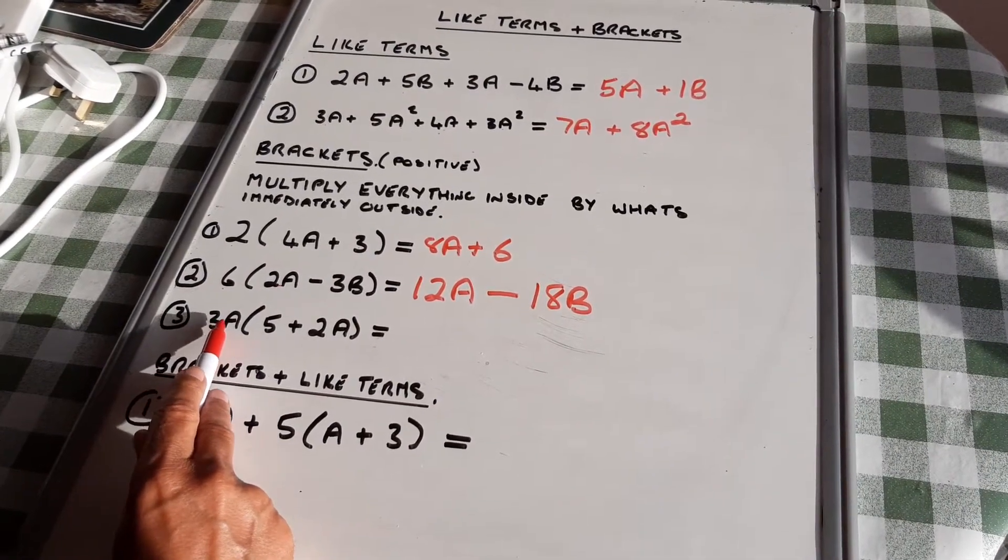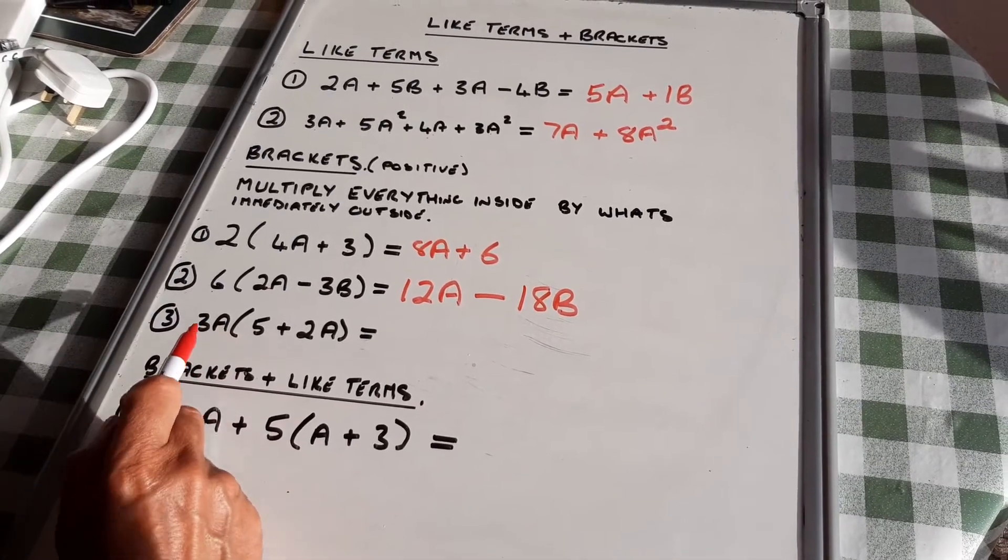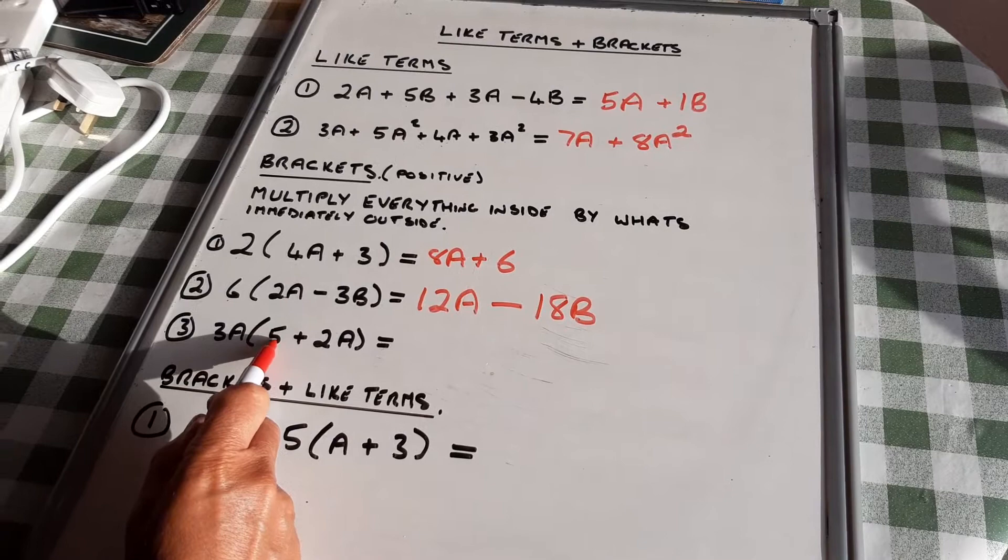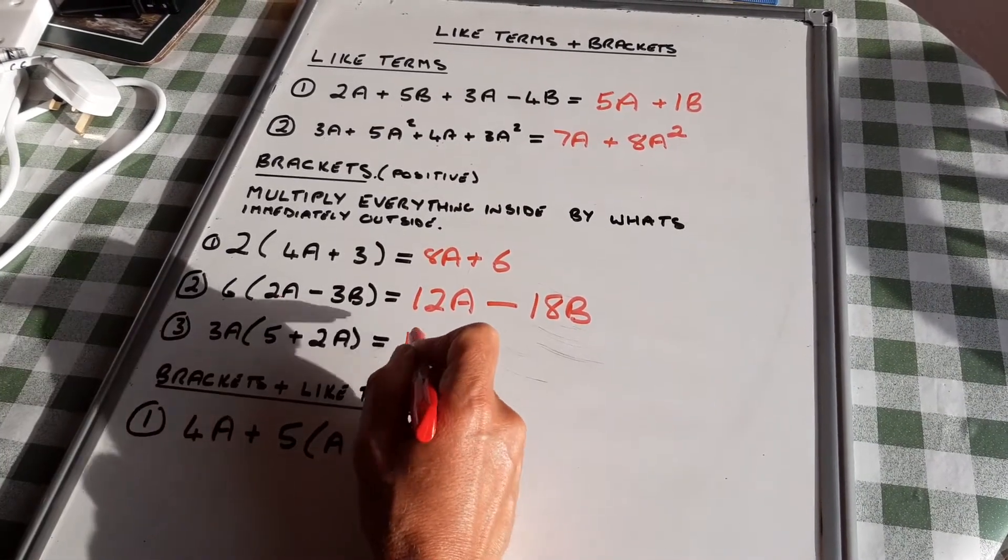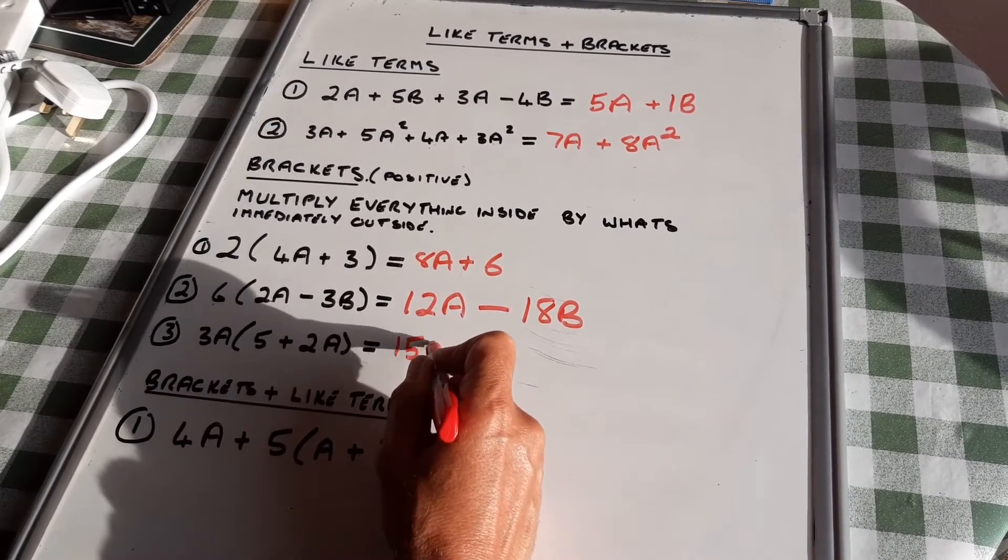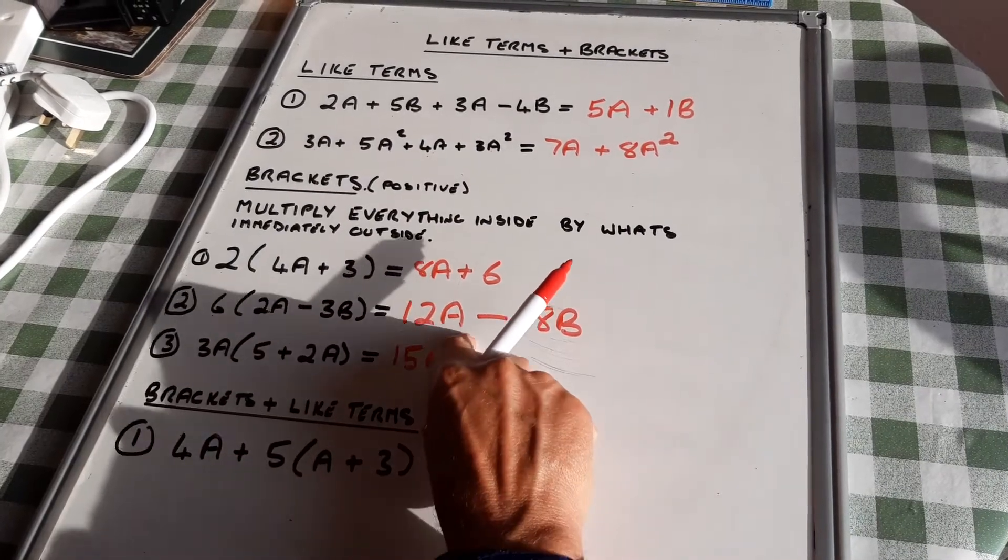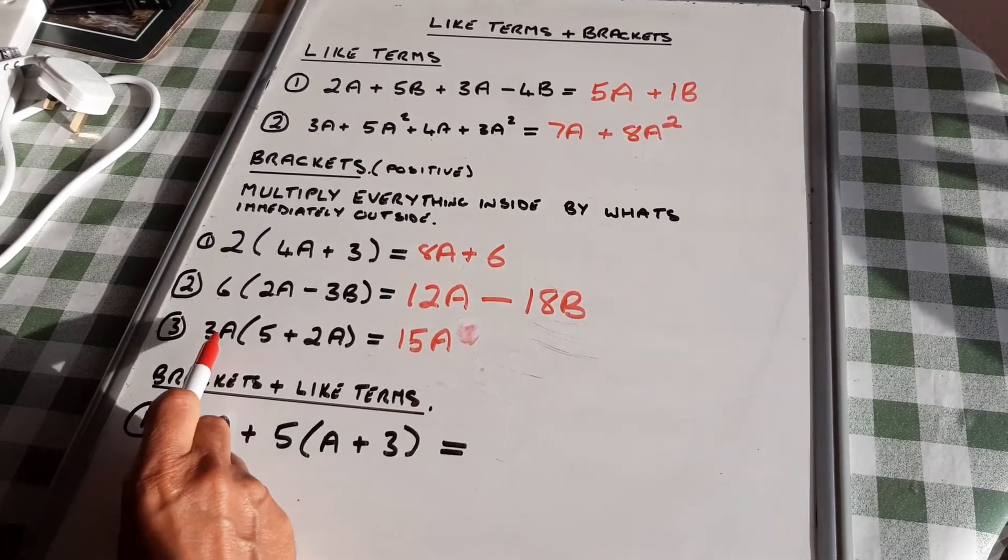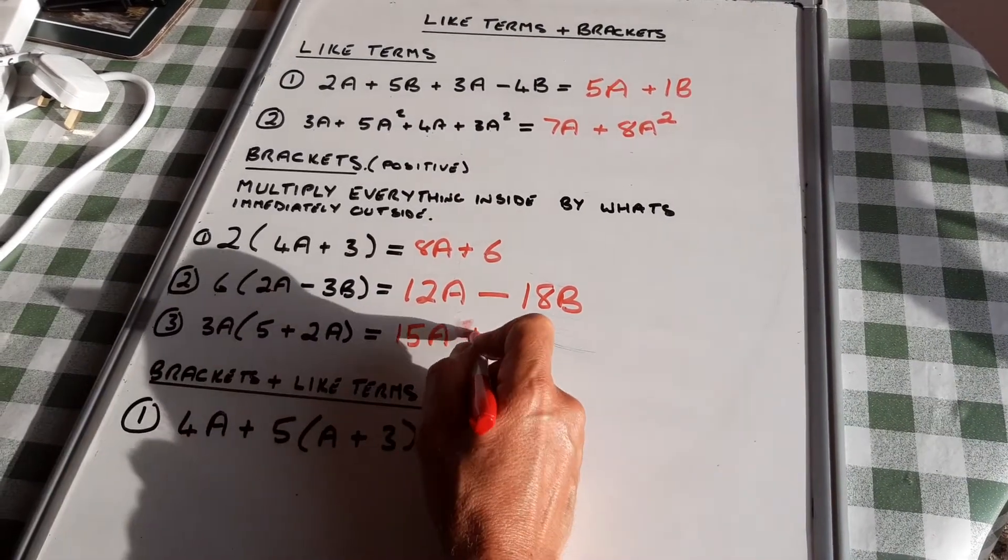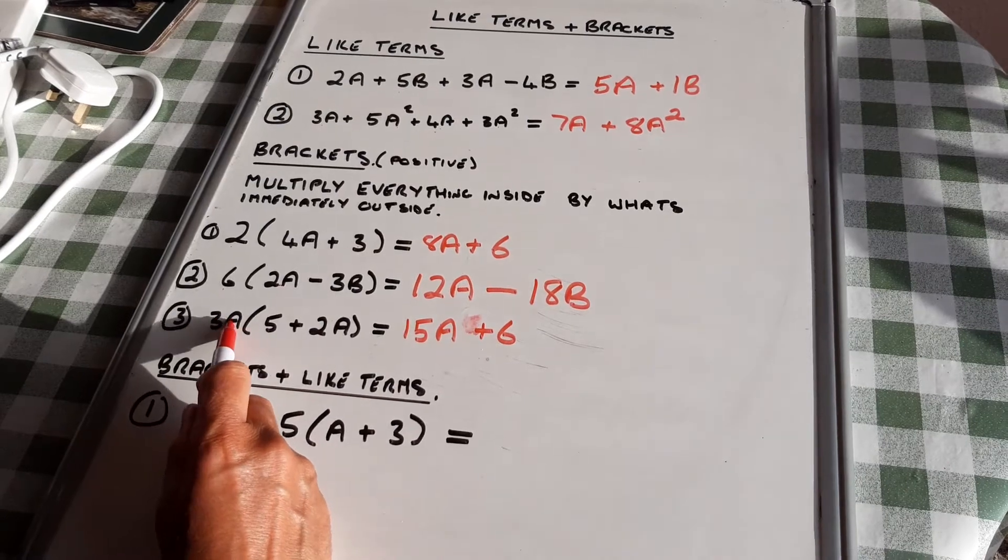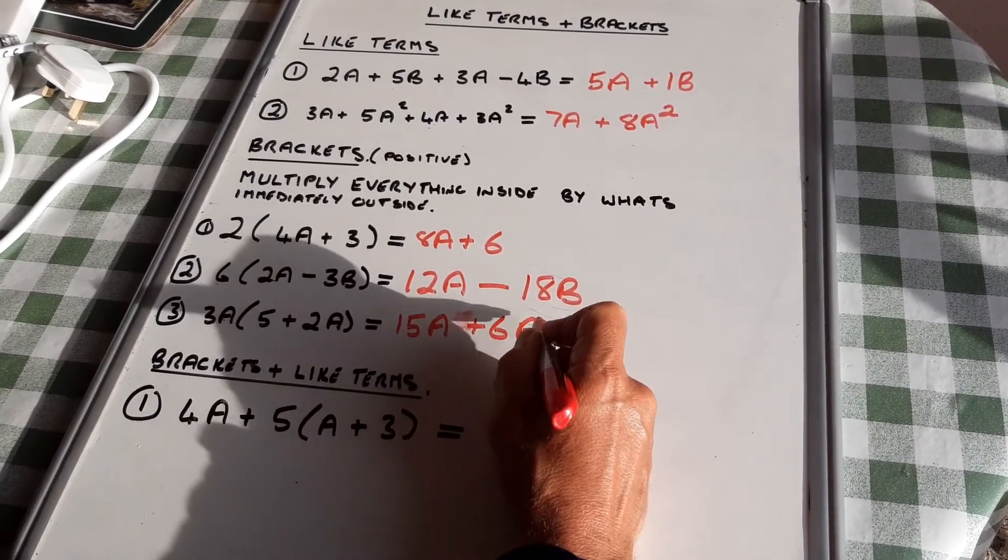A bit harder, because I've got a number and a letter outside the bracket. 3a times 5: 5 lots of 3a is 15a. Then 3 times 2 is 6, a times a is a squared, so 6a squared.